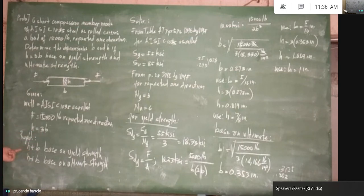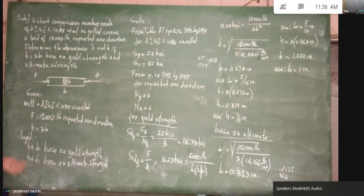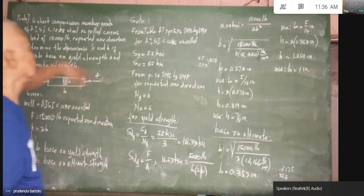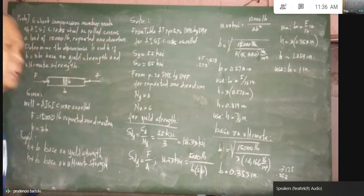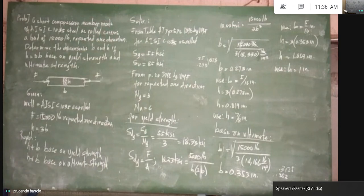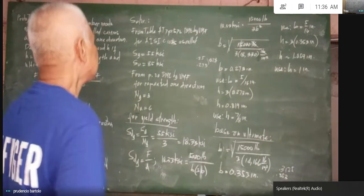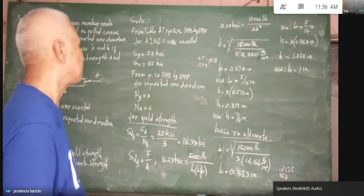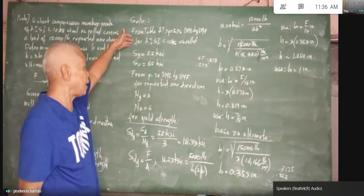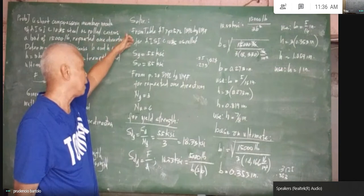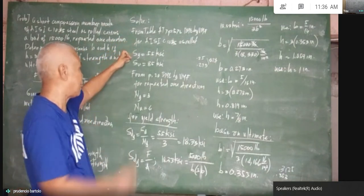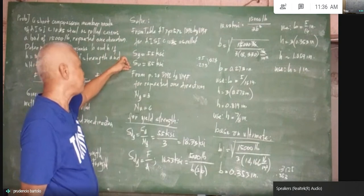We are required to find the values of X and B based on yield strength and X and B based on ultimate strength. From Table 87, page 576, Design of Machine Elements by Virgil Moring Faires, for AISI C-1035 steel as rolled, the yield strength is 55 KSI and the ultimate strength is 85 KSI.